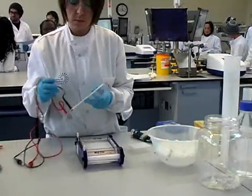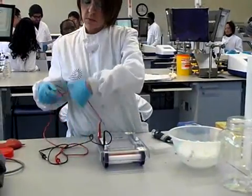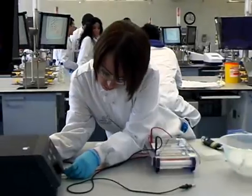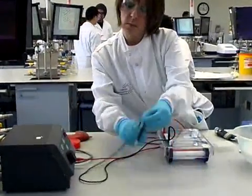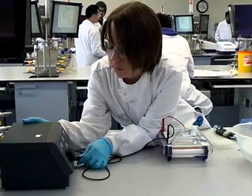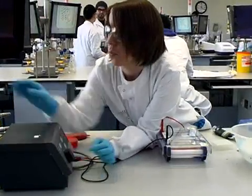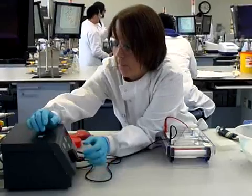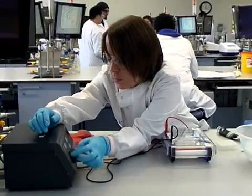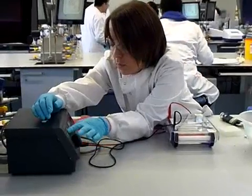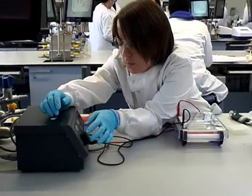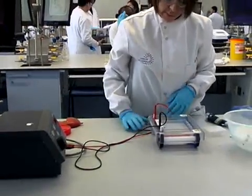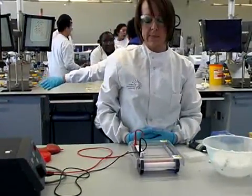Once the samples have been added, the cover is put on the electrophoresis tank and the wires are connected to the electricity supply. The current is then switched on, adjusted to the correct voltage, and now the gel is left to run for 30 minutes.